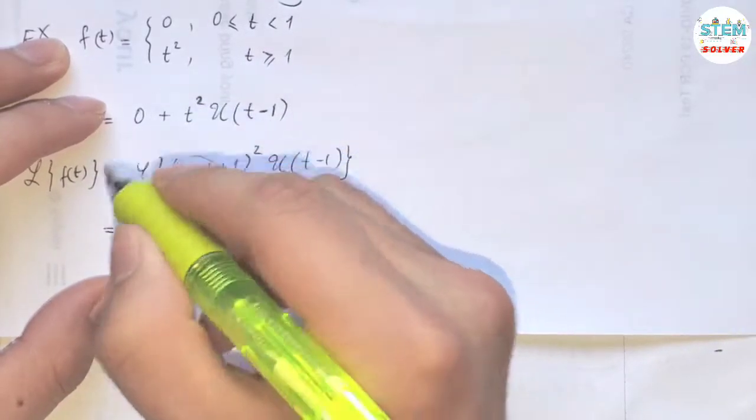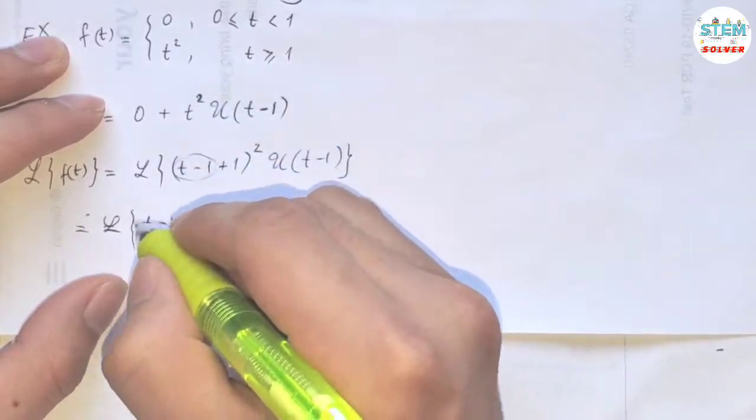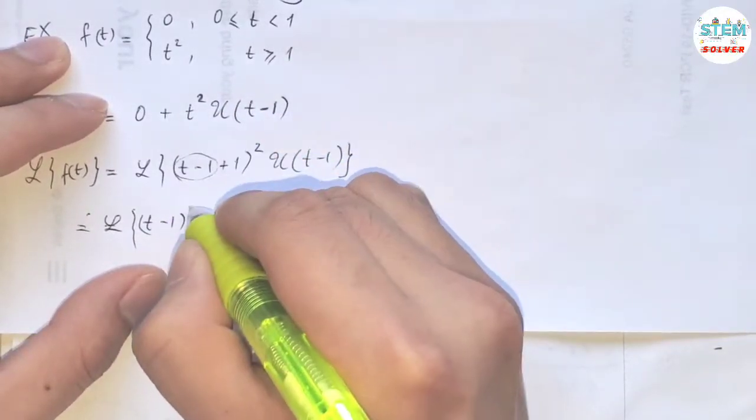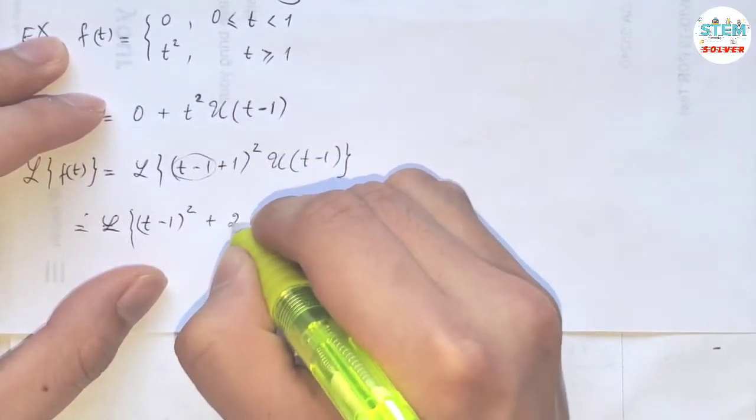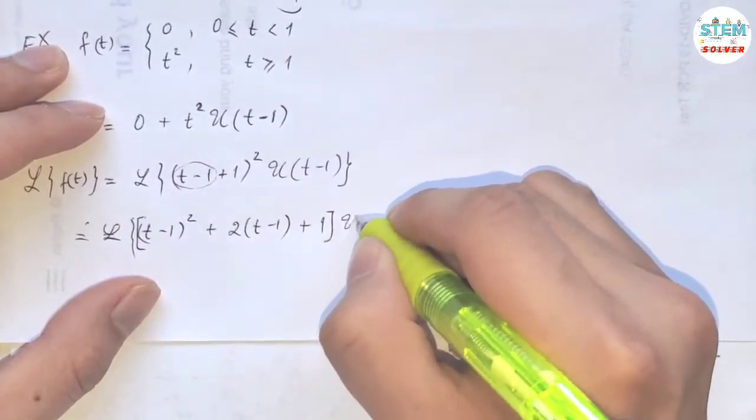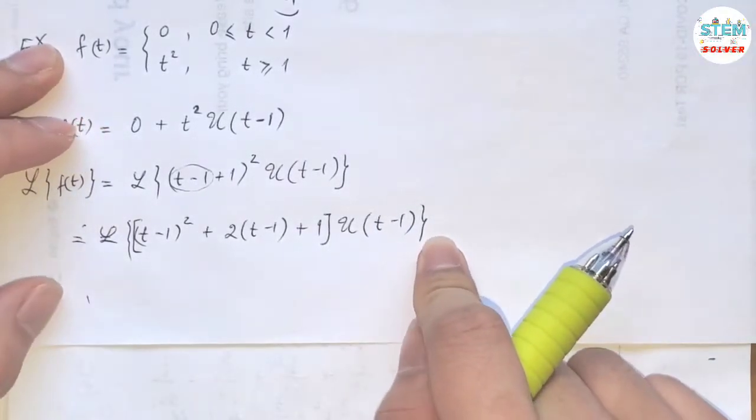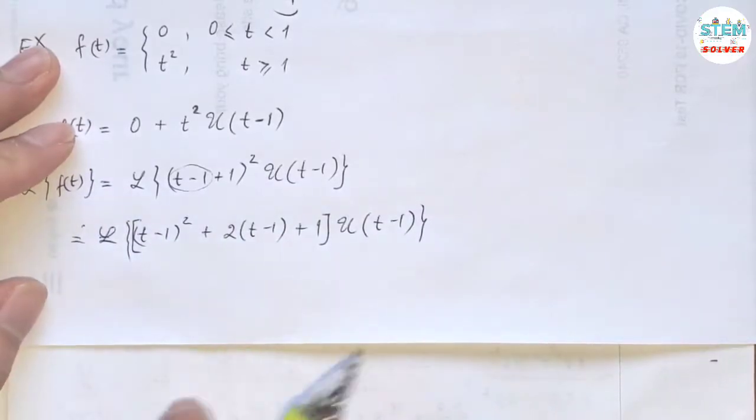So I'm going to have t minus one. Oops, I forgot the L here. So I'm going to keep t minus one as a group. So (t-1)² plus 2(t-1)(1) plus 1, and all of this multiplied by u(t-1). Okay, now the arguments all match up, so we can apply the second translation theorem here.